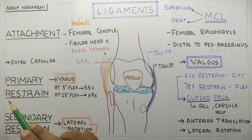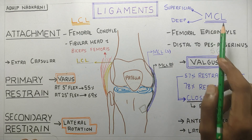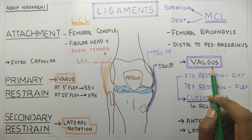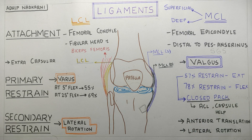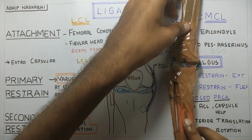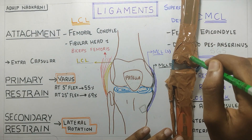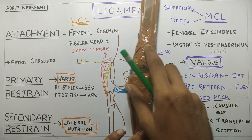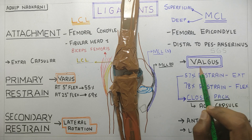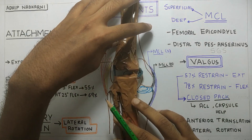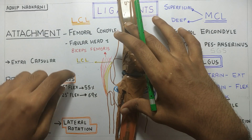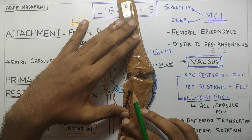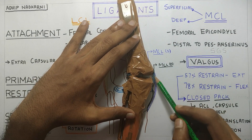Moving to the primary restraint provided by the MCL ligament: it provides restraint against valgus force. To demonstrate this I made a small model. This is the femur, this is the tibia, this is the fibula. When there is a valgus force on the knee joint — that is, inward force on the knee — if someone kicks you from outside, your knee will go inward, and this excess movement is prevented by the MCL ligament.